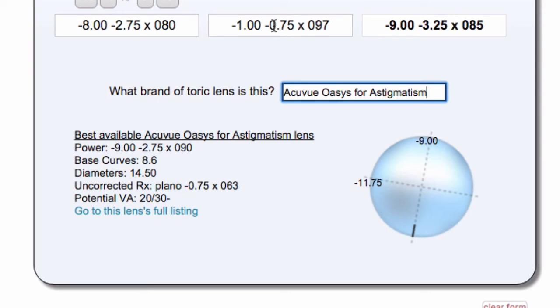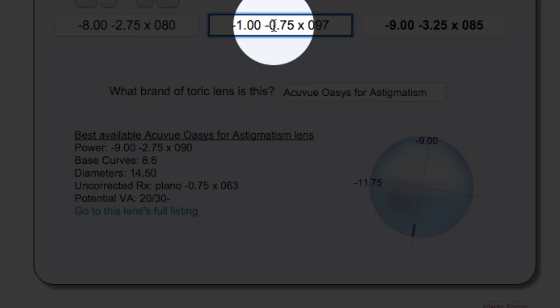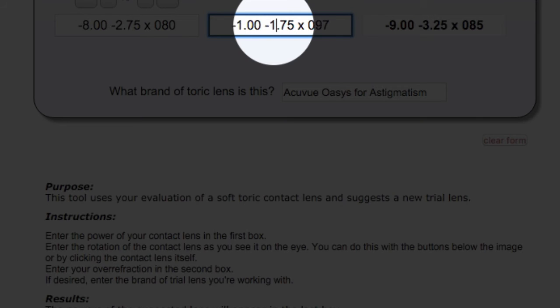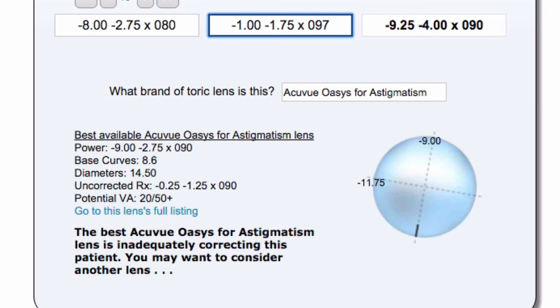If it's leaving more uncorrected prescription, for example, if I made this 1.75, there's more uncorrected astigmatism. The best vision is more in the 20/50 range. And it gives you some advice - the best lens in this brand seems to be a little inadequate correcting the vision, and you might want to consider another lens.